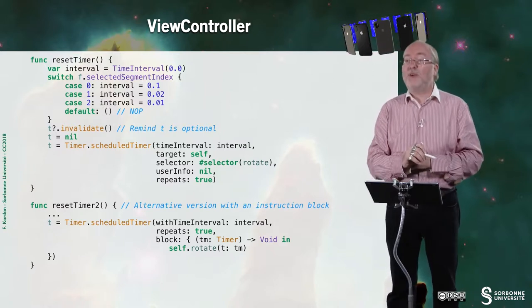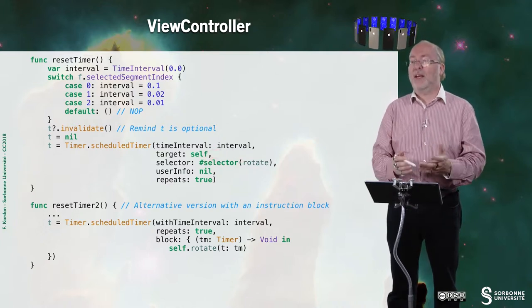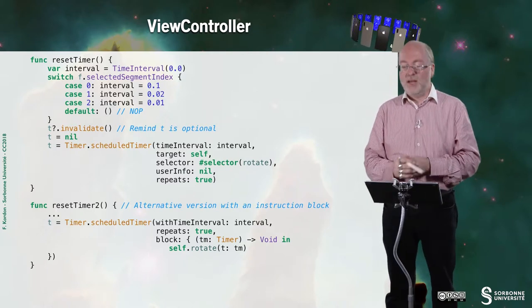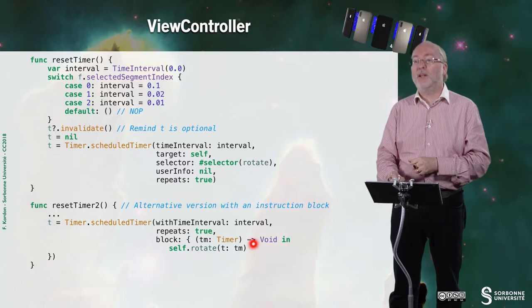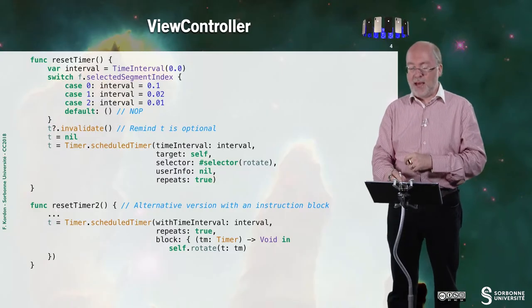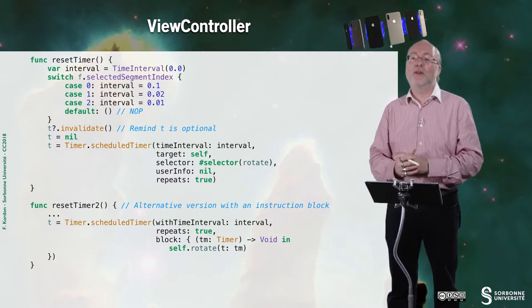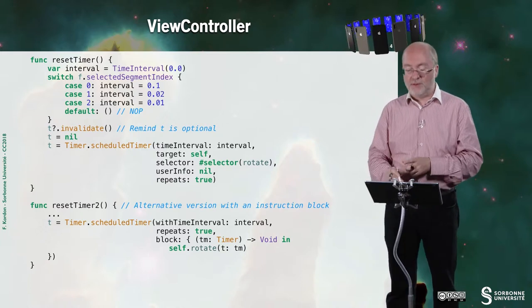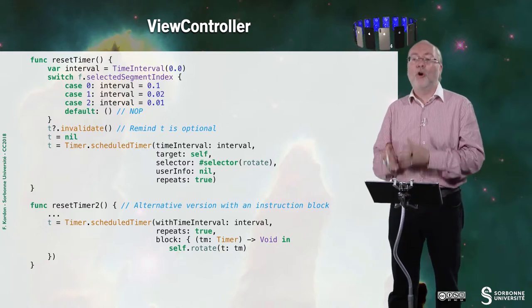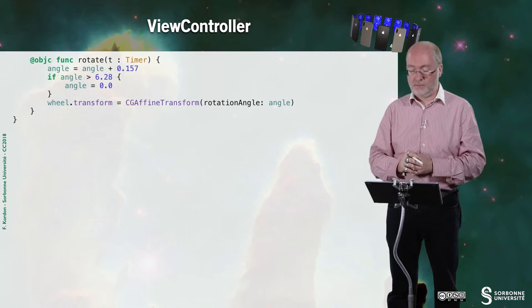Then I create a new timer with the new time interval that has been selected from the segmented control. I could do it differently. Here I say self is the target with method rotate. I can state it differently by just creating this function inline. Here I will have the same stuff, but I will provide a block of instruction that takes a timer in parameter and returns void. I will not use the timer - I will just launch rotate, as I do here.